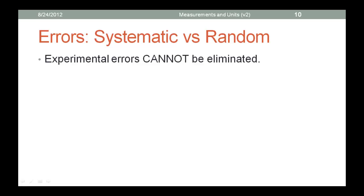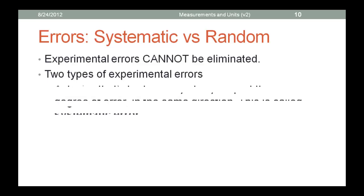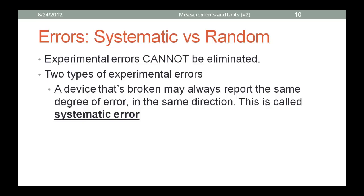Experimental errors, on the other hand, are inherent, meaning they are part of the measurement process and cannot be eliminated simply by repeating the experiment no matter how carefully. There are two types of experimental errors: systematic errors and random errors. A device that is broken may always report the same degree of error in the same direction. This is called systematic error. If the device is incapable of reporting the same value, we say it has lots of random error.